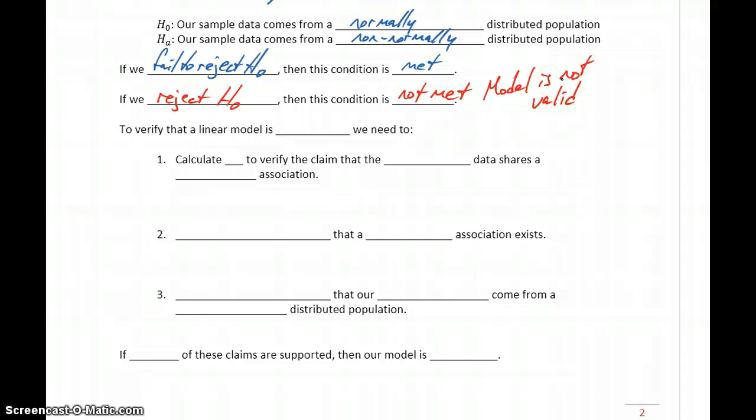To verify that a linear model is valid, we can summarize this in three basic steps. We need to calculate r, the correlation coefficient, to verify the claim that our sample data shares a linear association. So we want to calculate that value for r and verify that r is close to negative one or one. Keep in mind there's a lot of room for subjectivity in the middle there. If you have values of 0.6, 0.4, negative 0.4, negative 0.6, there still might be a correlation.